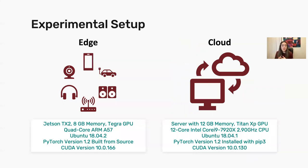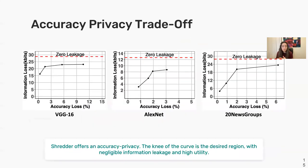For experiments, we use a Jetson TX2 board as an edge device and a server with a Titan XP GPU as our cloud, running PyTorch on both. Our main result is the accuracy-privacy tradeoff: on the accuracy axis you can see the loss in accuracy, and for privacy we measure information loss in bits — specifically how much mutual information is lost between the original raw image and the activation being sent.